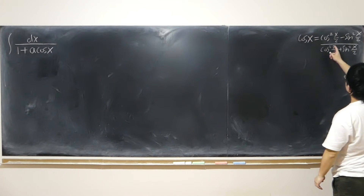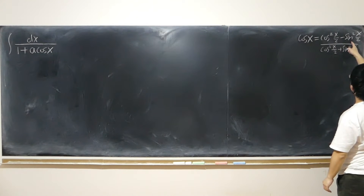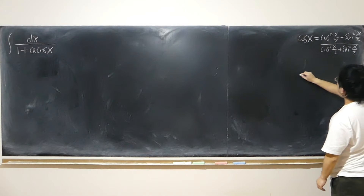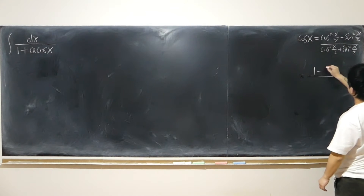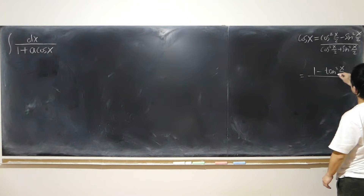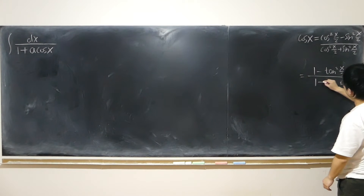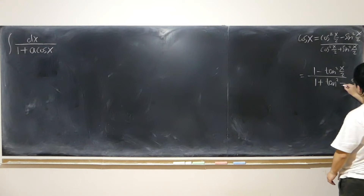So the cosine squared becomes 1, and sine squared becomes tangent squared. So we get 1 minus tangent squared (x/2) over 1 plus tangent squared (x/2).